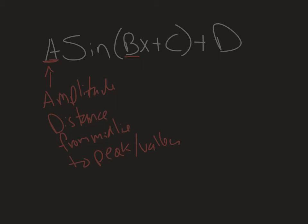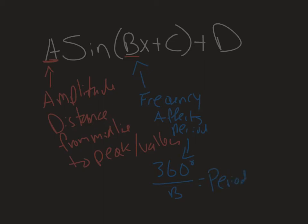If we're looking at B, this is what they call the frequency — I like to think of it as affecting the period. 360 degrees divided by whatever B is equals your period. So say it was sine of 2x: it's going to go around the circle two times faster, so it only takes 180 degrees. Likewise, if B were a fraction, it would take longer to go around and the period would be stretched out.